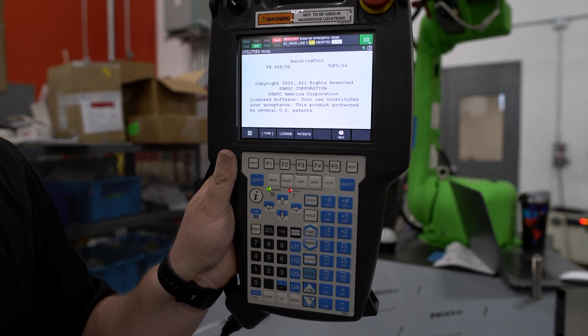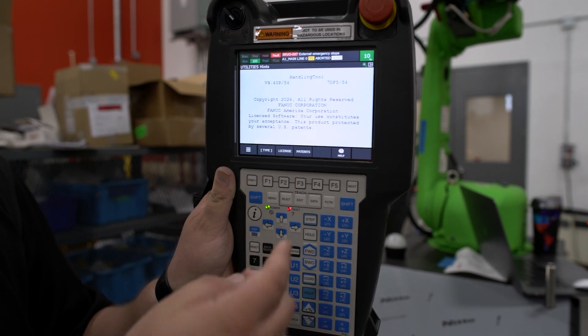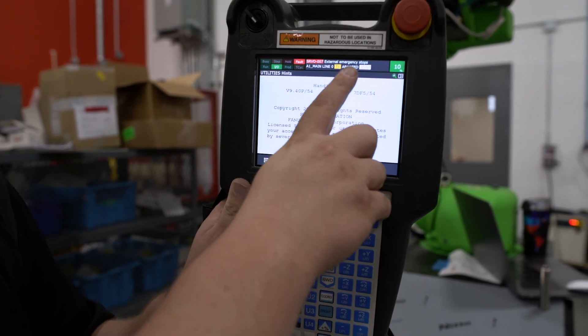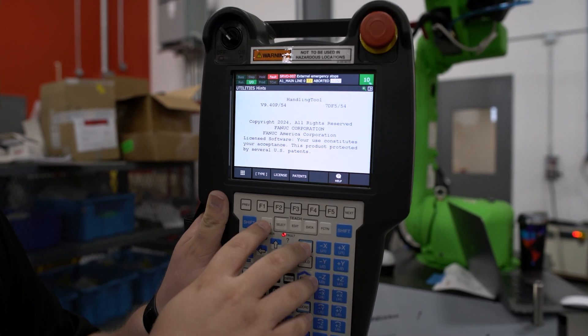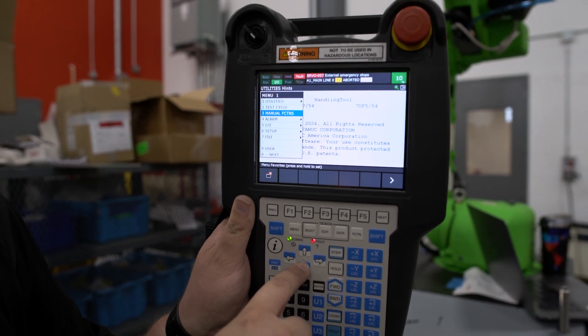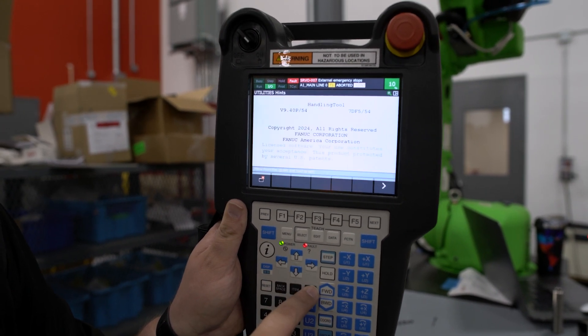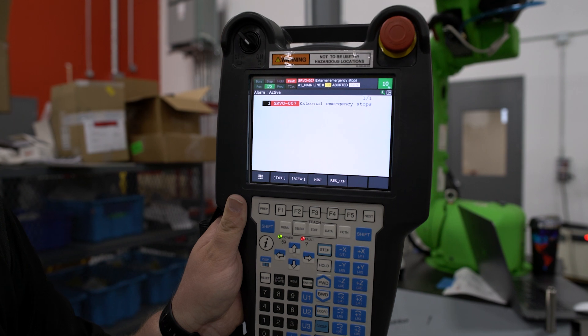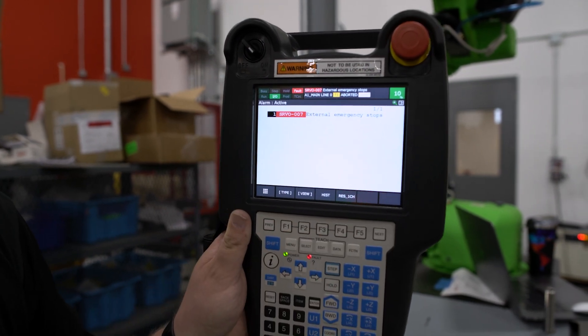In order to get more information, we will come to our teach pendant where it does indicate that we have an external emergency stop. To see more information, we will go to our menu button, cursor down to 4 for alarms, and look at our active alarm screen where we can clearly see that we have an external emergency stop.